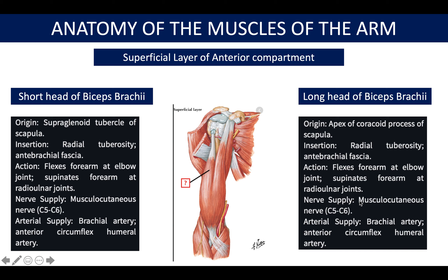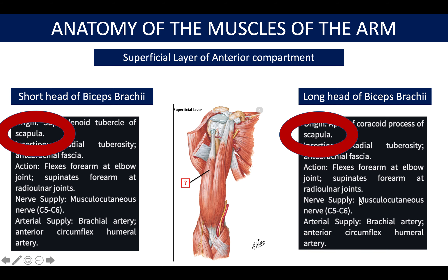The short head of the biceps brachii is more medial and the long head is more lateral. The key things to remember are the origins: both originate from the scapula — one from the coracoid process and one from the supraglenoid tubercle.